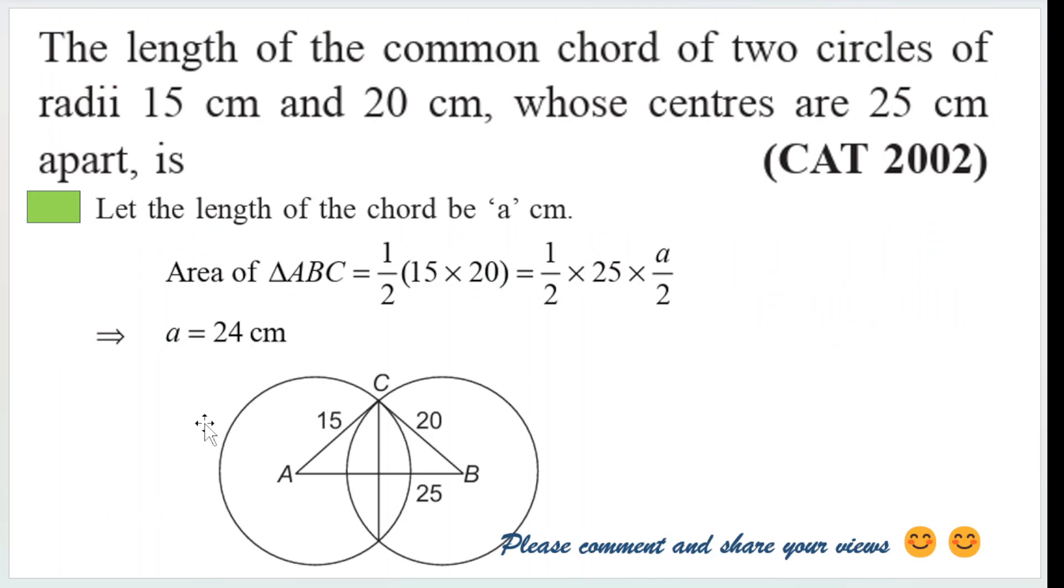Let us draw a diagram like this. Two circles, one of them the radius is 15, another radius is 20, right. And the distance between them is actually 25 cm. What does that mean? This A, C,